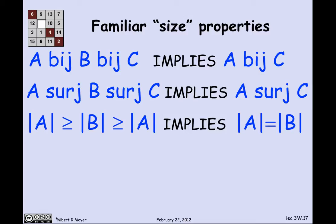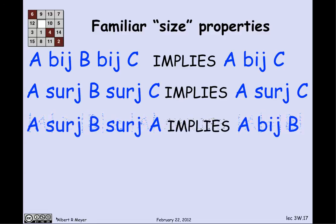Finally, a more interesting one: if A and B are each greater than or equal to each other — |A| ≥ |B| and |B| ≥ |A| — then in fact they're the same size. That would correspond to: if A surjB and B surjA, then A bijB.